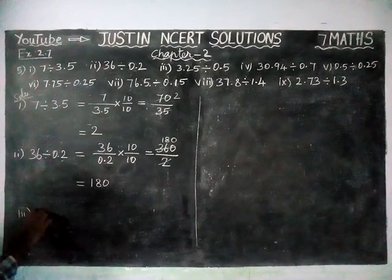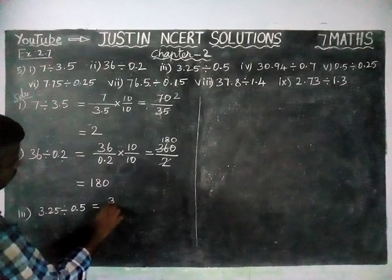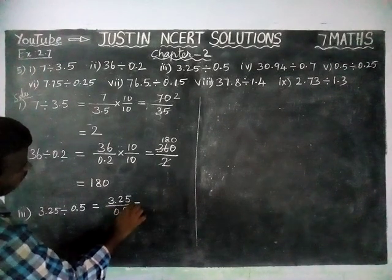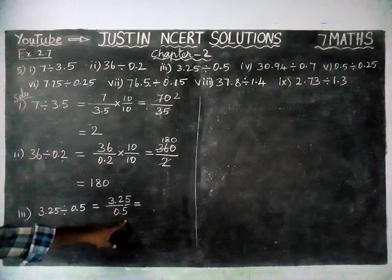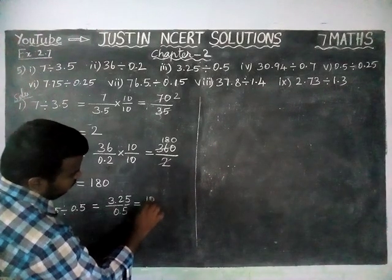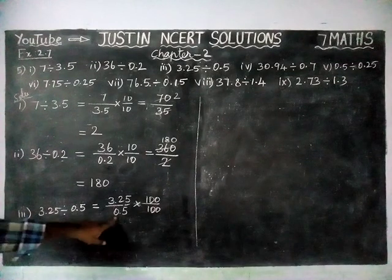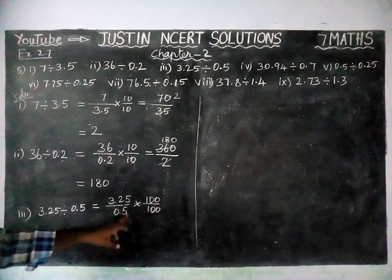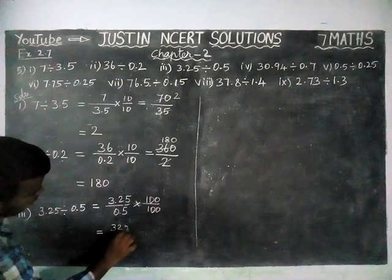Third question: 3.25 divided by 0.5 is equal to 3.25 divided by 0.5. In the denominator, 0.5 is there. To cancel these decimal points, we have to multiply and divide by 100 over 100. We can do it in two methods. To remove only the decimal part in the denominator alone, we multiply only 10 over 10. But we are going to cancel both decimal parts, so we multiply by 100 over 100.